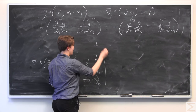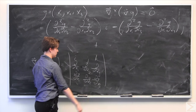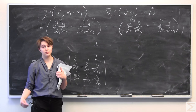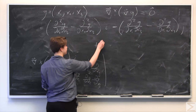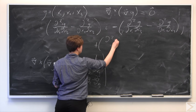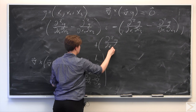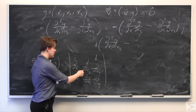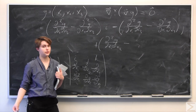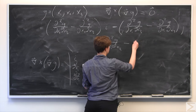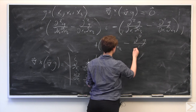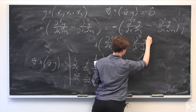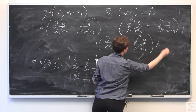And finally for the k component in the cofactor expansion, we have ∂²g/∂x1∂x2 minus ∂²g/∂x1∂x2, all times k.